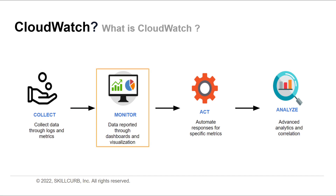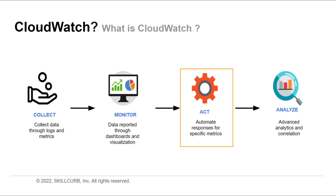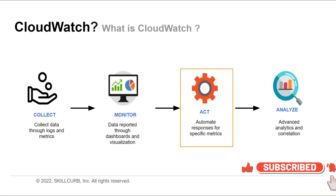The next step is to monitor the selected resources that you are interested in. This involves the visualization of applications and the infrastructure with CloudWatch dashboards. You can correlate logs and metrics side-by-side to troubleshoot and set alerts and alarms with CloudWatch alarms. This brings us to the active stage where you automate the responses based on certain thresholds for the resources. This step helps you perform operations based on the data monitored in the first step. You create alarms based on metric value thresholds you specify, or alarms that can watch for anomalous metric behavior based on machine learning algorithms.